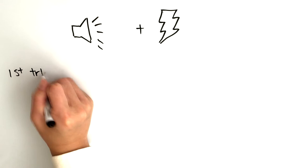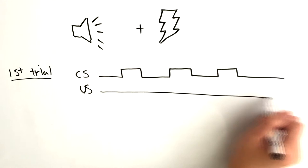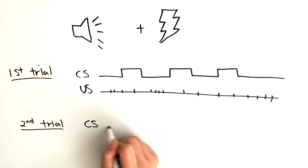Rescorla looked at an example where a tone is presented for a short period of time and shock is presented at one moment or the other. In the first trial, the shock is presented at random. During the second trial, the shock is only presented when the conditioned stimulus is present.